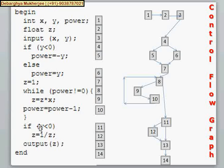And if this if is true, then we will do z equals to 1 by z. That is level number 12. Then output z that is 13. And at the end we will have label number 14.